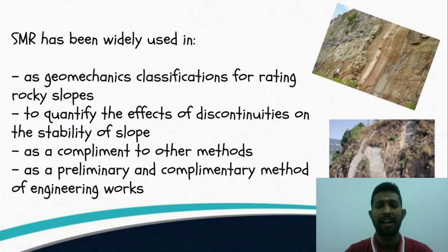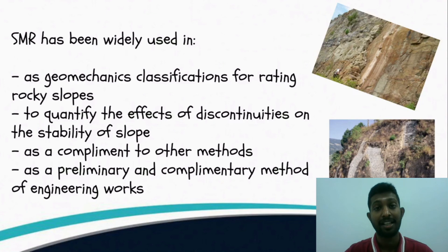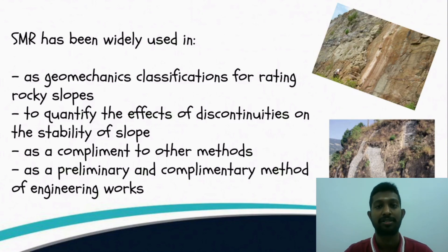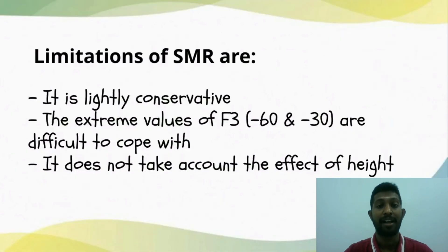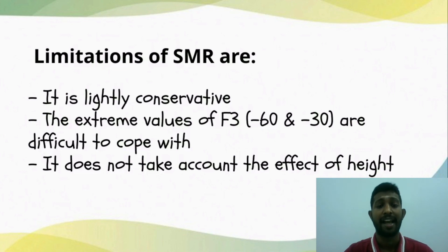SMR has been widely used in various fields: geomechanics classification for rating rock slopes, quantifying the effects of discontinuity on slope stability, as a complement to other methods such as Rock Mass Rating, and as a preliminary and complementary method for engineering works. However, SMR also has limitations: it is slightly conservative, the extreme values of F3 from negative 60 to negative 30 degrees are difficult to handle, and it does not account for the effects of slope height.